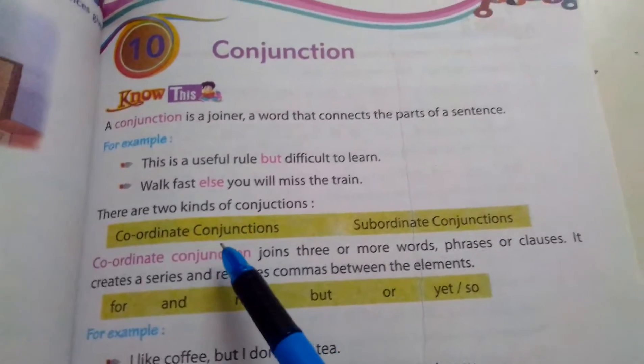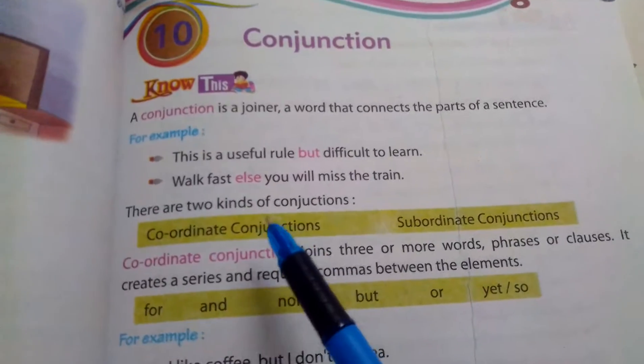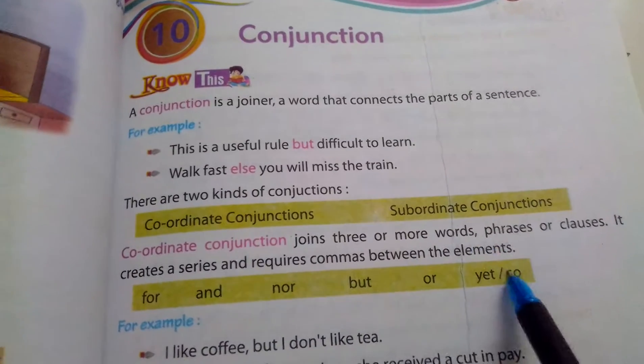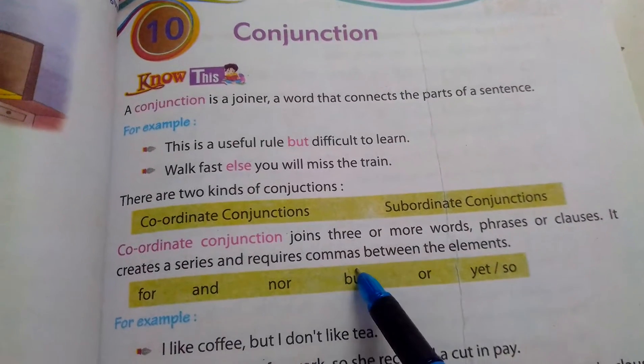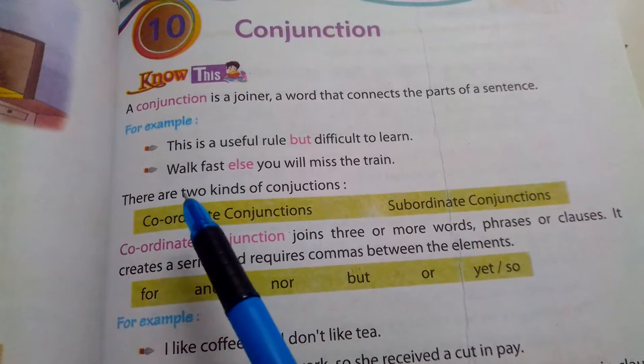Toh 'and', jaisa hum bolte hai na — and, for, but, or, yet, so — yeh sab kya hai? Conjunctions hote hai.